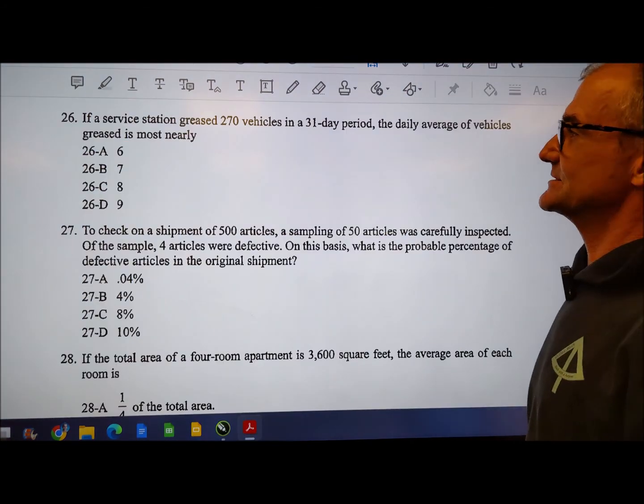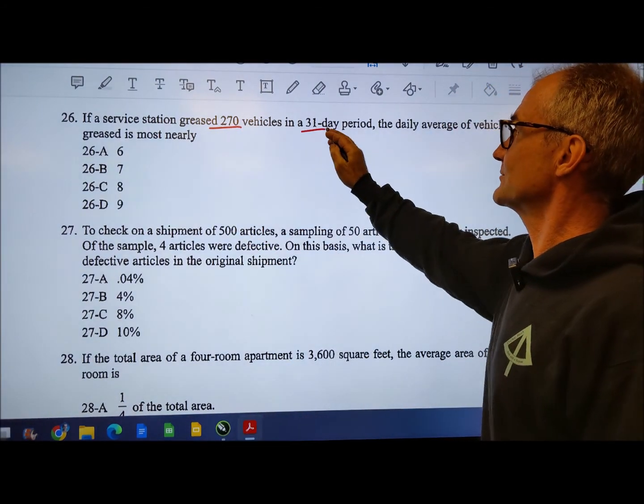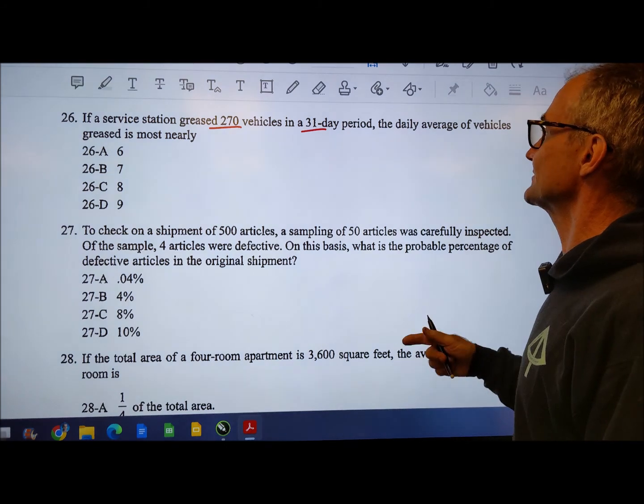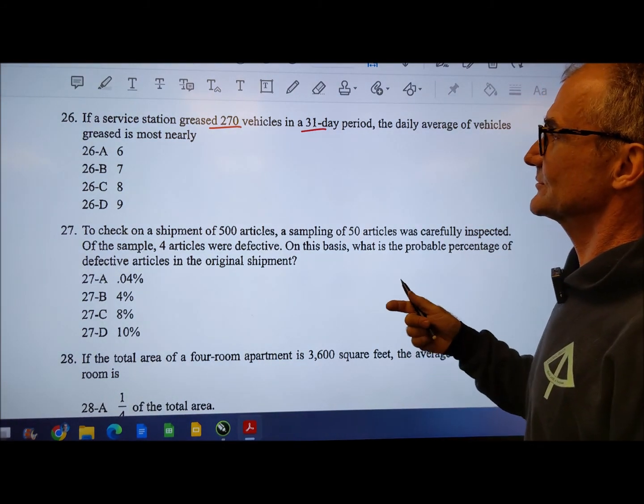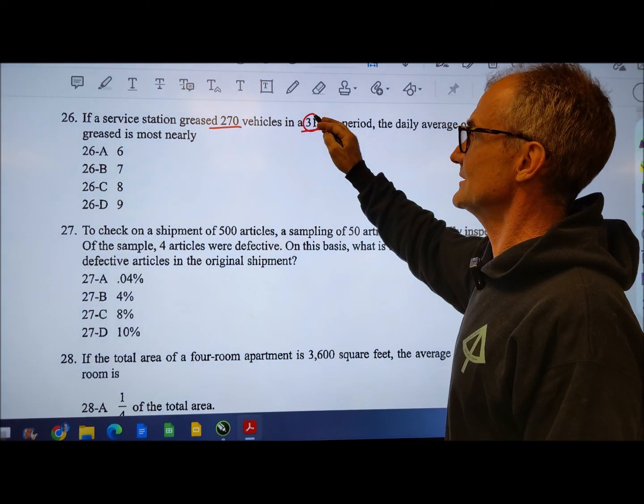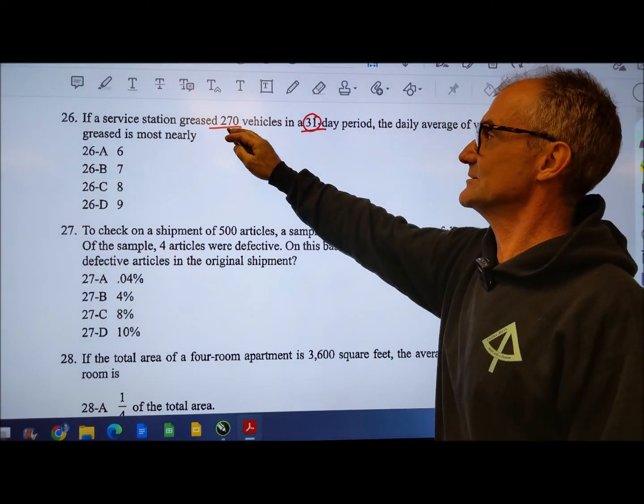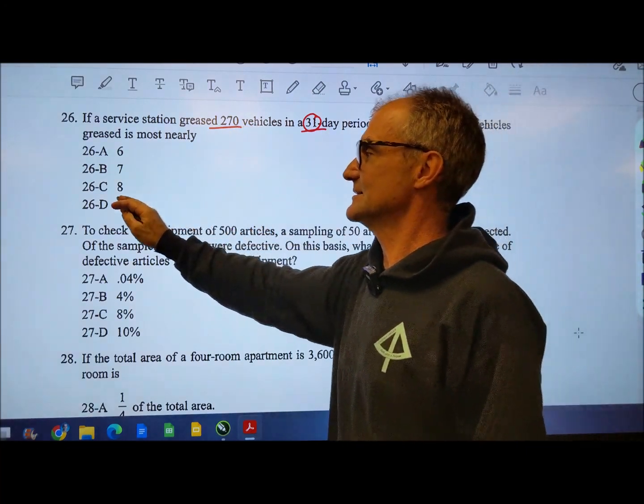Okay number 26, if a service station greased 270 vehicles in a 31 day period the daily average of vehicles. So we're going to just approximate this one. We're just going to round this to 30. 30 goes into 270. 3 goes into 27 nine times.